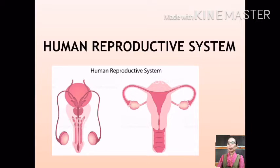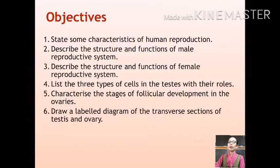Today we will learn about the male and female reproductive systems. The objectives to be achieved are: 1. State some characteristics of human reproduction.